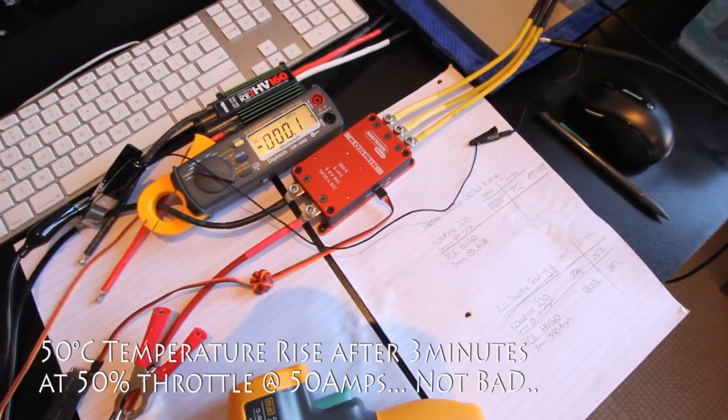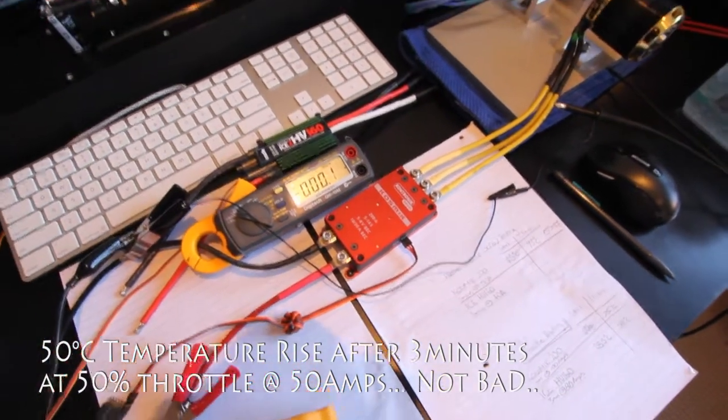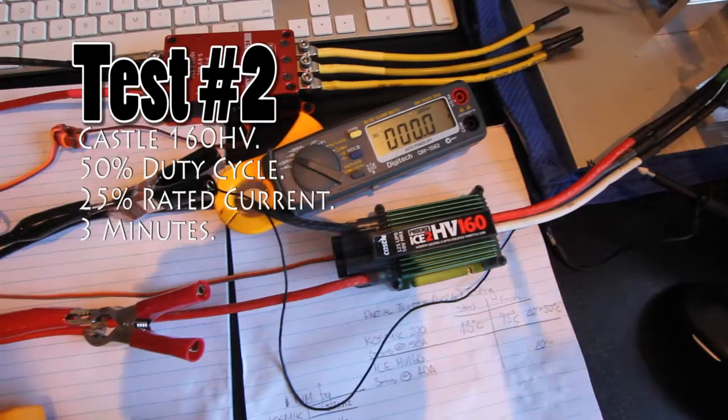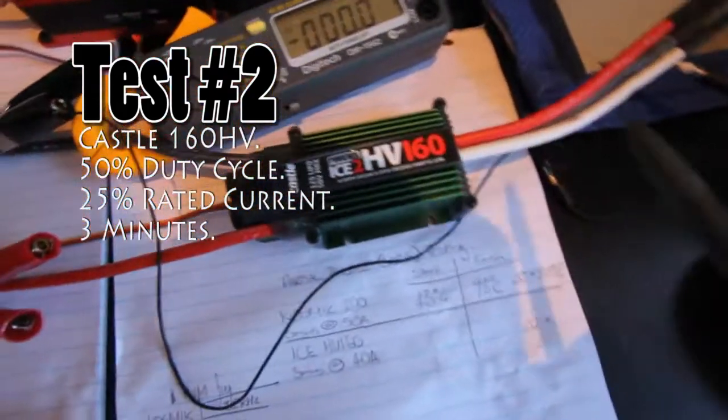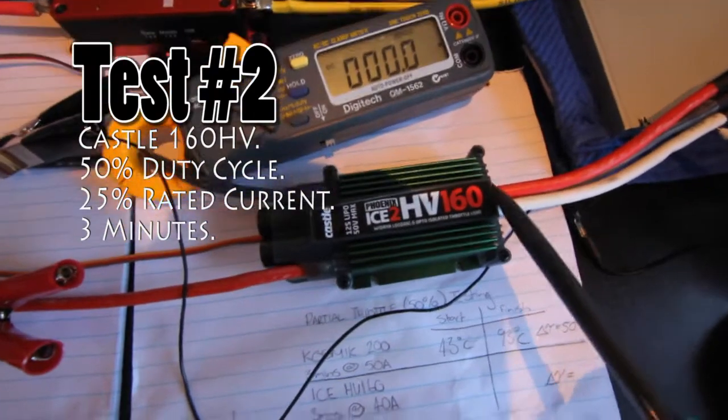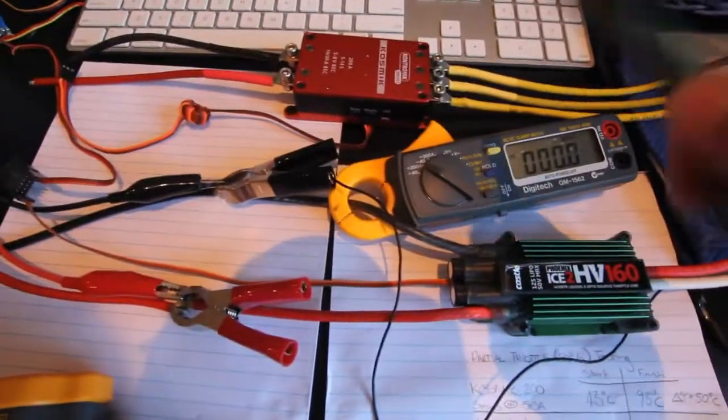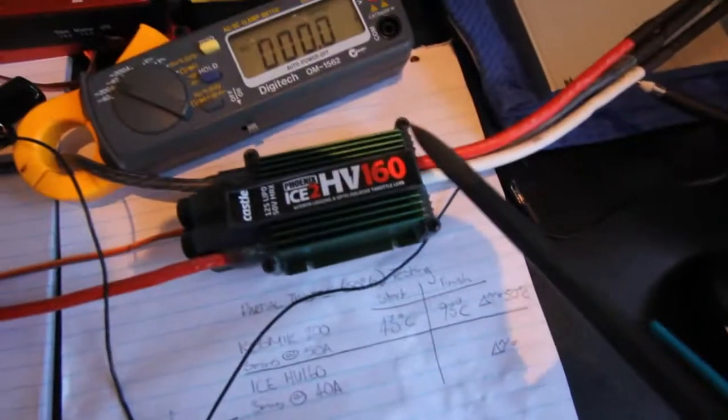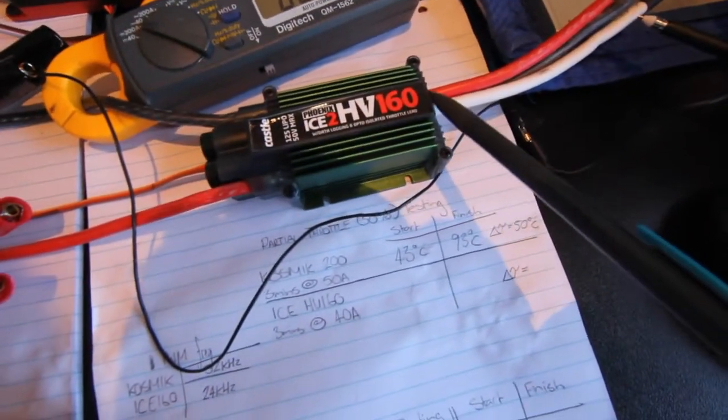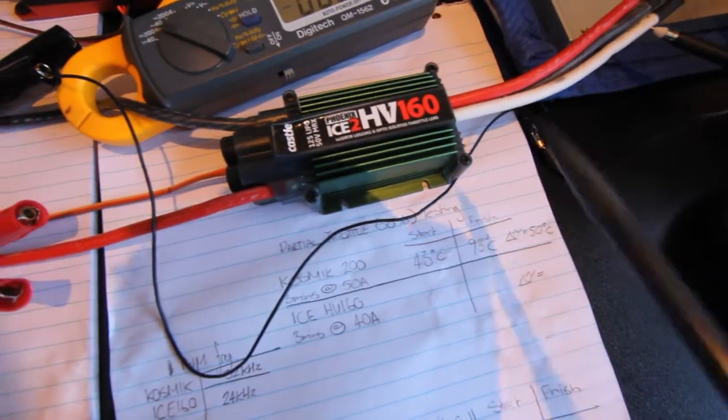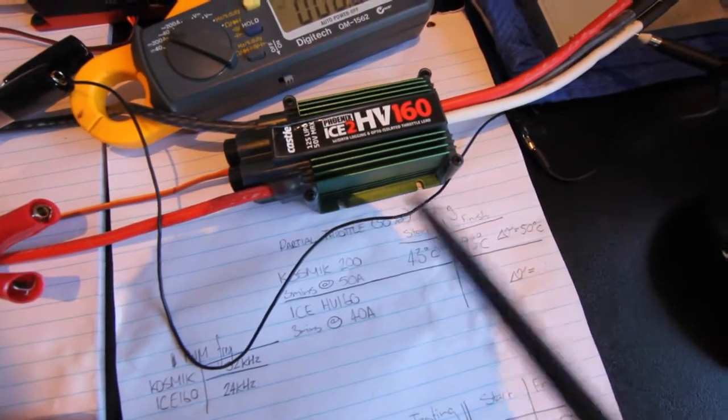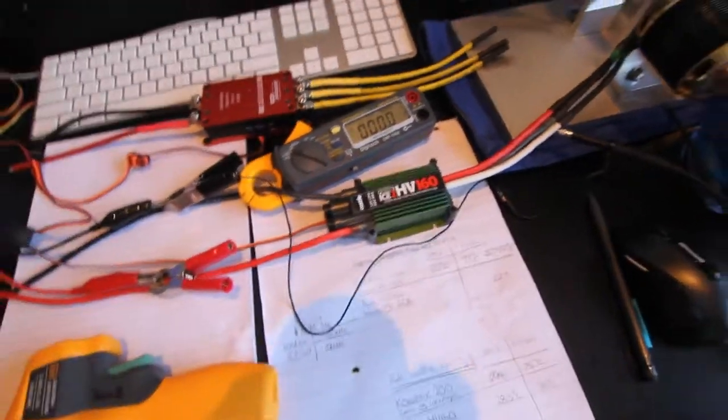Now time for the Castle HV160. Alright it's time to start testing the HV160 at partial throttle, so as I did in the Cosmic 200 test I'll be testing this at 50% throttle, at 25% of its rated current for three minutes, and I'll be measuring the start and finish temperatures. Alright let's see how it's going to go.